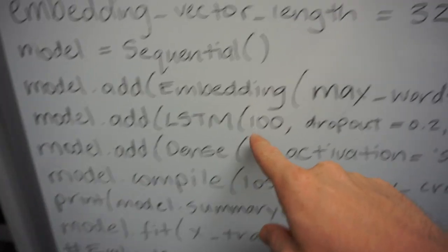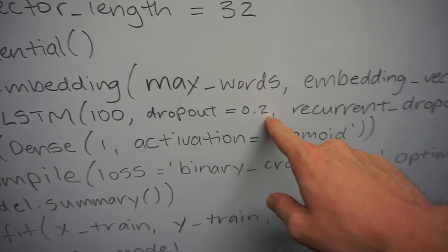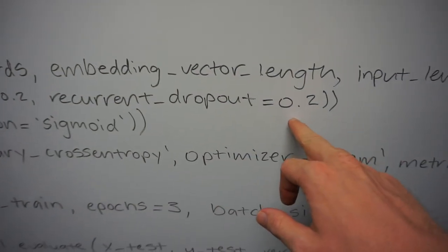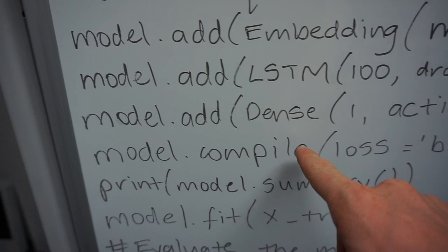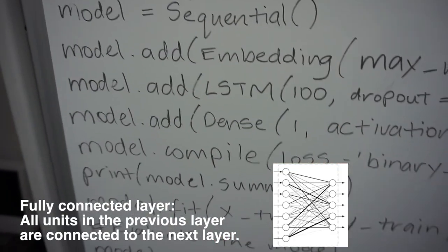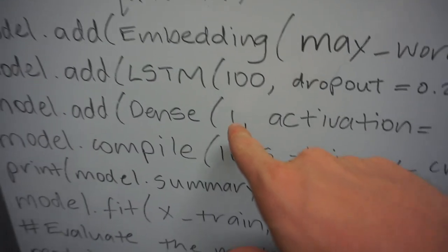Next we add an LSTM layer with 100 units, dropout of 0.2, and recurrent_dropout of 0.2. The dropout is applied at the output of the LSTM cell, and recurrent_dropout is applied to the data fed through the LSTM cell — because LSTM lets certain data in and certain data through, like a tap. Then we add a Dense fully connected layer with just one output unit, because the goal is simply positive or negative — that's the end goal of this model.